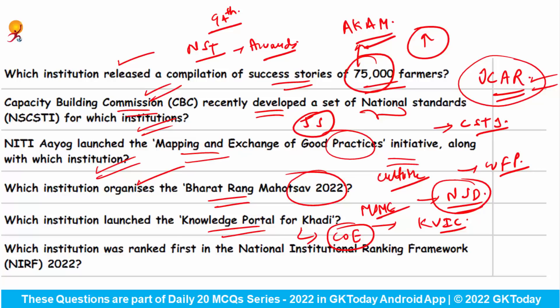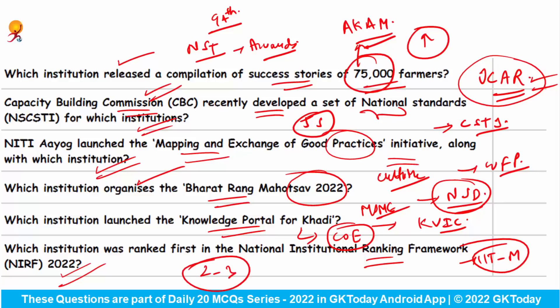Which institution was ranked first in the National Institutional Ranking Framework 2022? The answer is IIT Madras. Write in the comments which institution was in the second and third position in India.